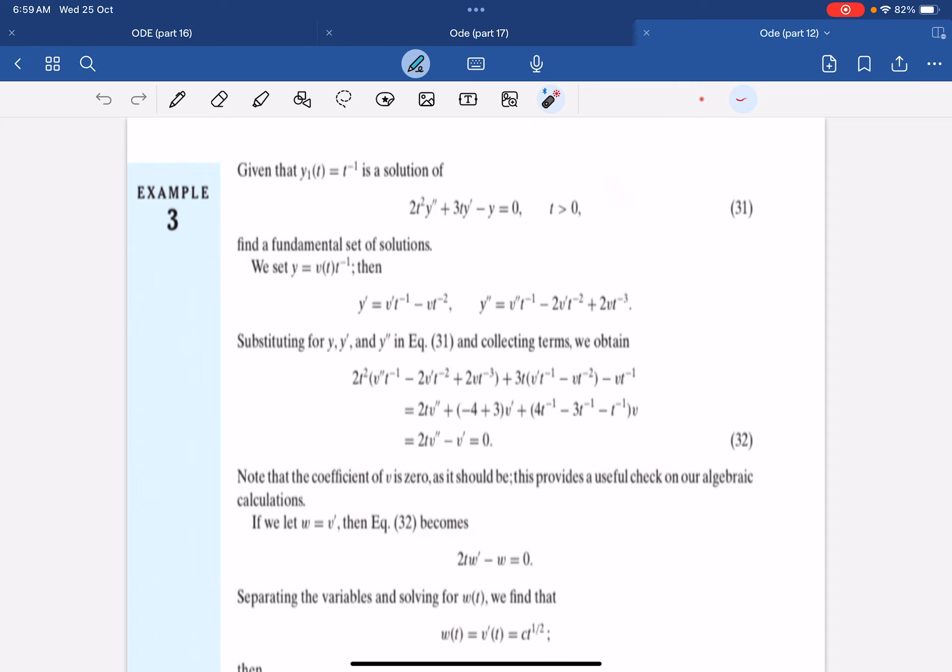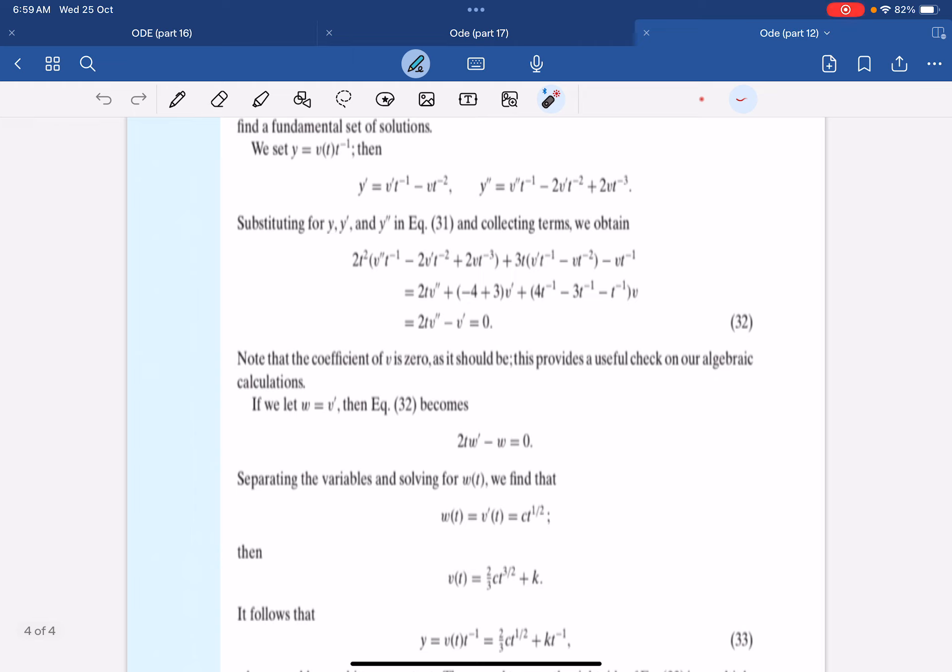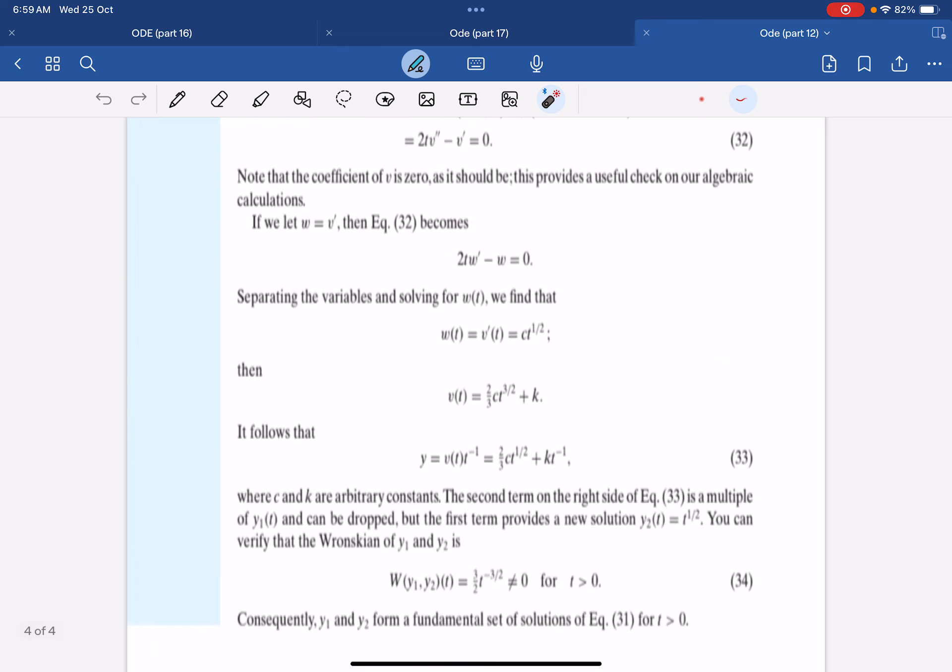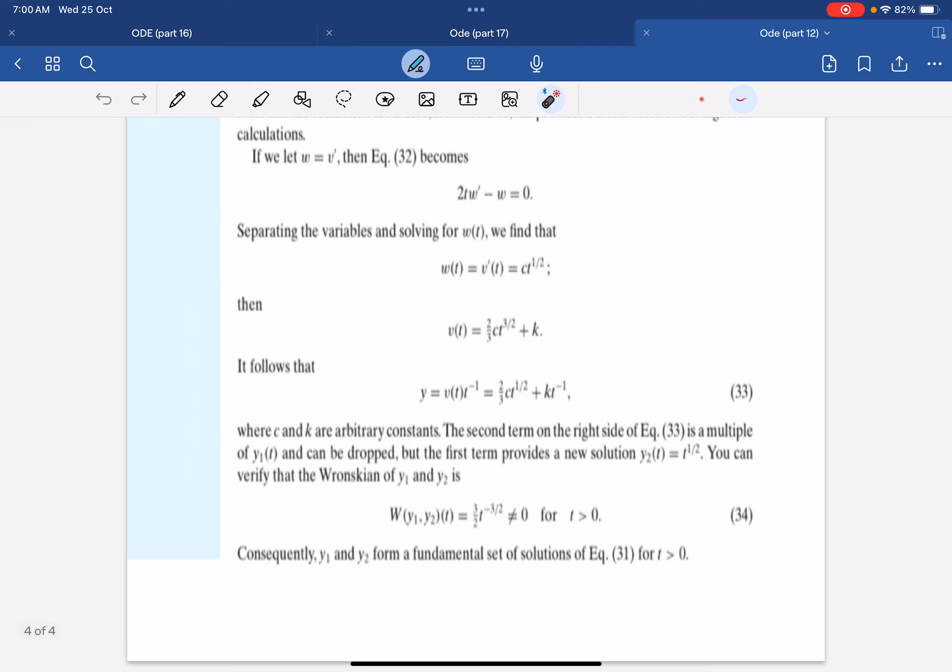With that formula, now we just let w equal to v prime. It will be reduced to this first order ODE. We solve for w easily, which is ct^(1/2). Then v will just equal—we know that v prime equals to w, so we already know w, we just need to integrate to get v. This is the answer.